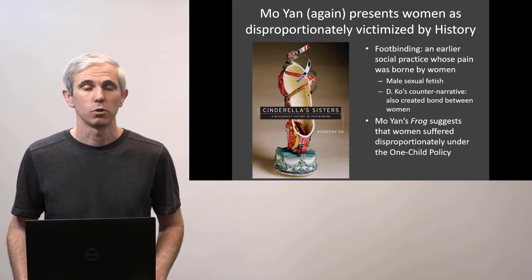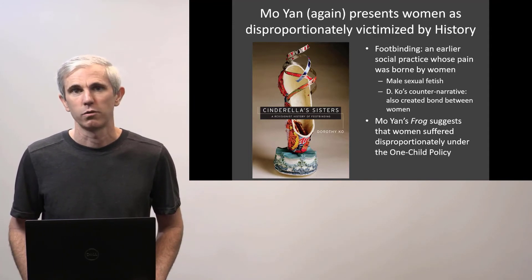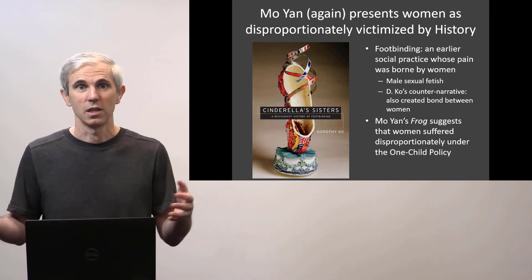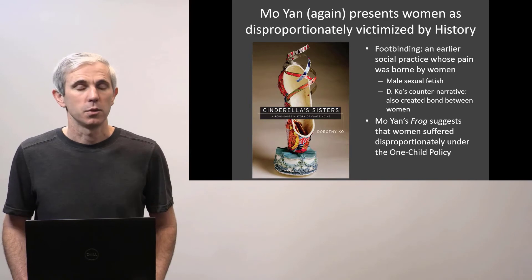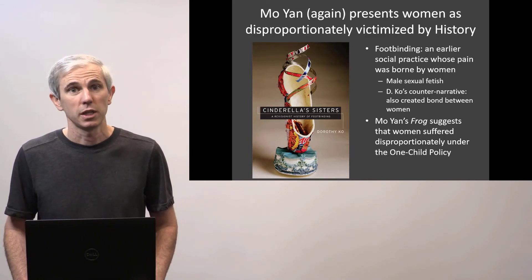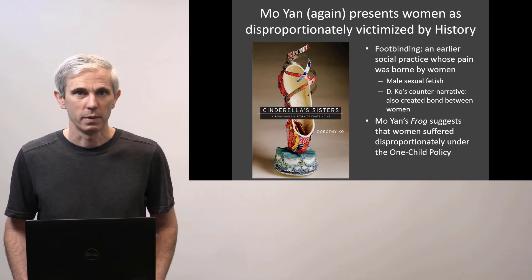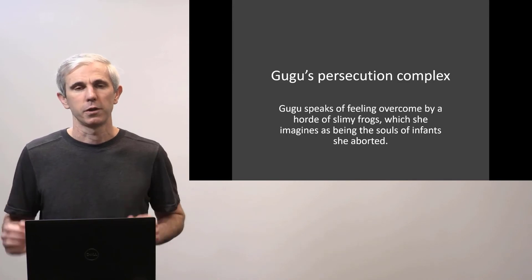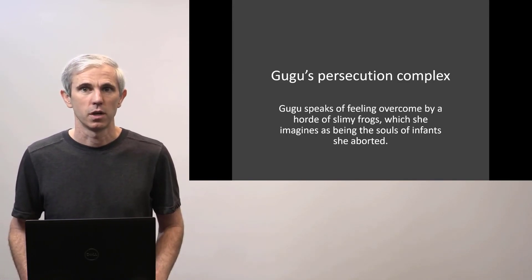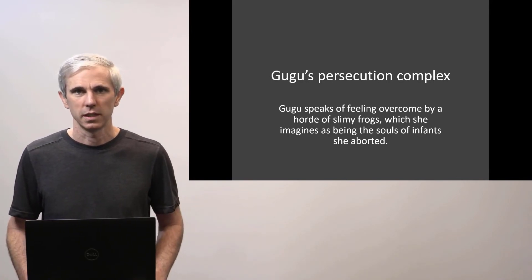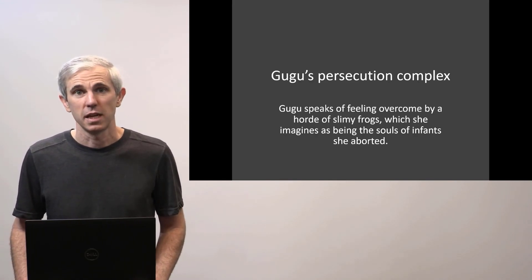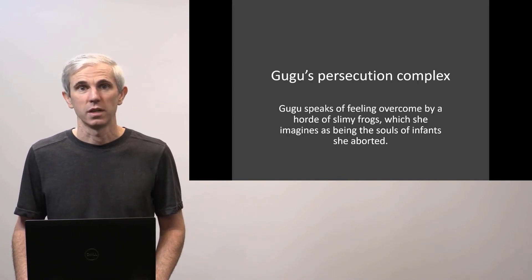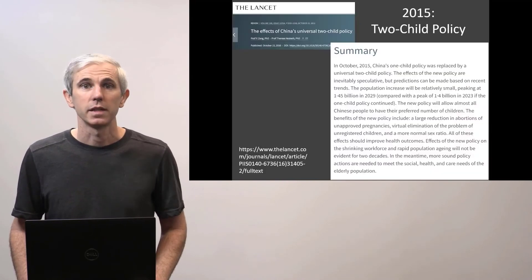Just like women of yore were victimized by foot binding — a male social fetish that was part of a male-dominated social order that literally hobbled women. For a different view on the history of foot binding, you could look at Cinderella's Sisters by Dorothy Ko, a study that presents women not as victims but as agents who have their own desires and ways of participating in this cultural practice. One of the implicit messages of Frog is that, under the one-child policy, the people in China who disproportionately suffered were women. Much of this suffering is concentrated in the figure of Gugu, who suffers something of a persecution complex later in the novel — even having nightmares in which the souls of all the infants she aborted come back to haunt her as a horde of slimy frogs.